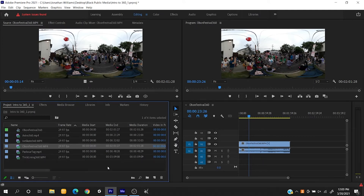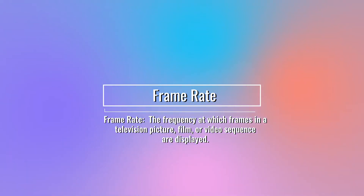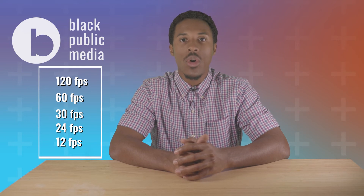Next we'll talk quickly about frame rate. Frame rate is the frequency at which frames in a television picture, film, or video sequence are displayed — the number of frames that occur in a second. Common frame rates are 30 or 60, and sometimes 24 or even 12 if we're dealing with animation.